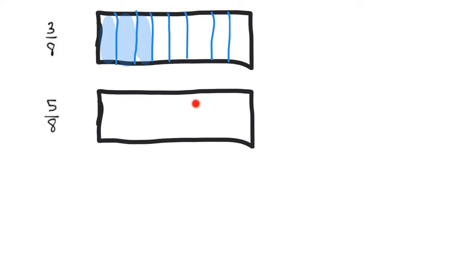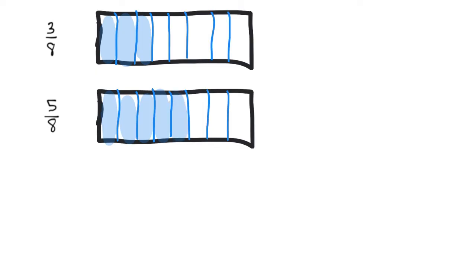Then let's do the same thing for 5/8. So 5/8 — we cut it into 8 identical pieces, that's the denominator — and then shade in 5 of them: 1, 2, 3, 4, 5. Now it's easy to compare. I can see that 5/8 is larger than 3/8 because there's more shaded in.